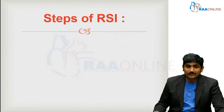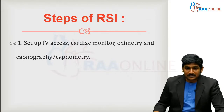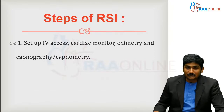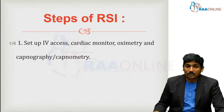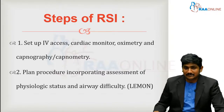The steps of Rapid Sequence Intubation: First, before doing the procedure, make sure we have a good IV access. Then connect the patient to a proper cardiac monitor where you will be able to see if the patient has arrhythmias. Then connect oximetry, and get ready with your capnography or capnometry as well. Plan the procedure along with the assessment of the physiological status and the airway difficulty.